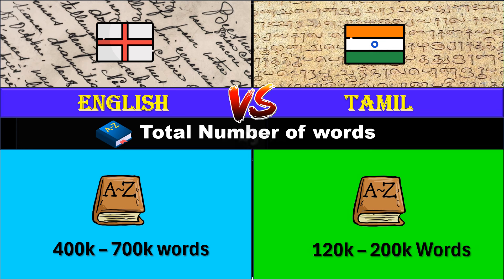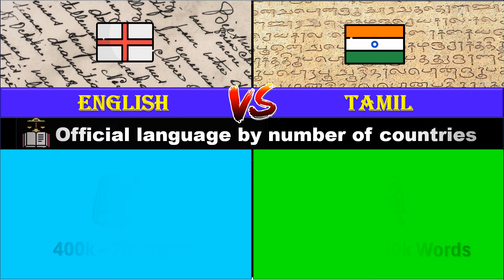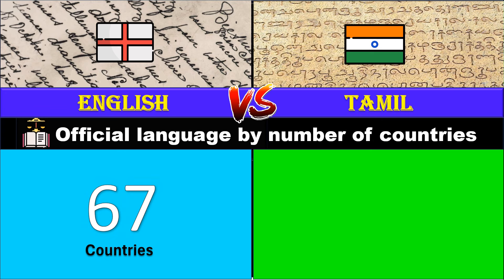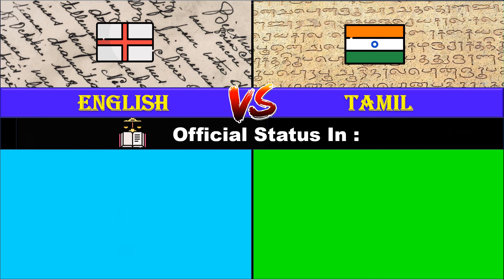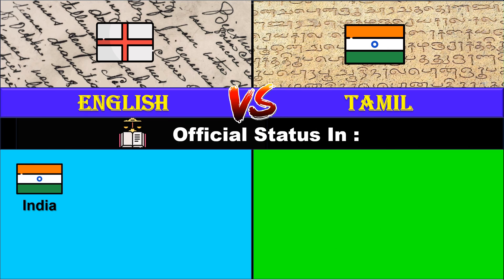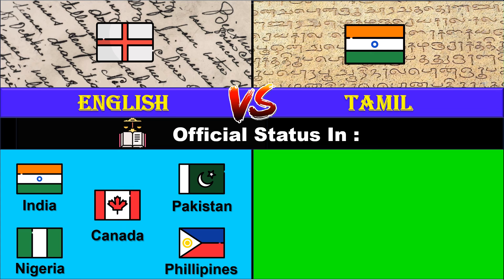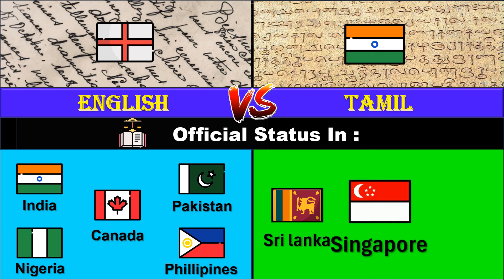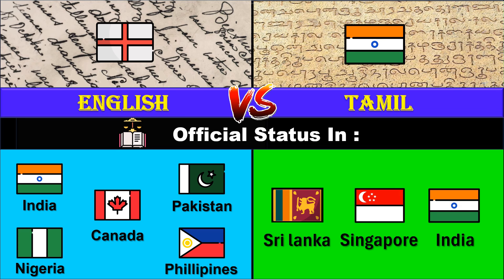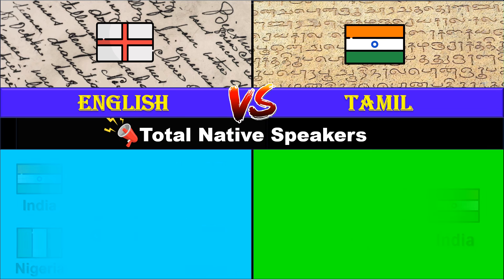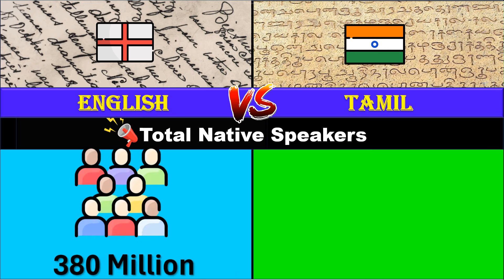Official language by number of countries: English is official in 67 countries, Tamil in three countries. English is official in countries like India, Pakistan, Nigeria, Philippines, Canada, and 60 more. Tamil is official in Sri Lanka, Singapore, and India.